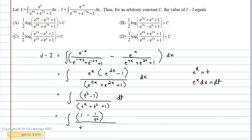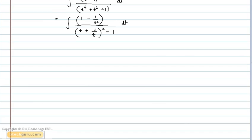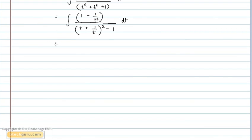which equals half of ln (t plus 1 by t minus 1) divided by (t plus 1 by t plus 1), plus C.